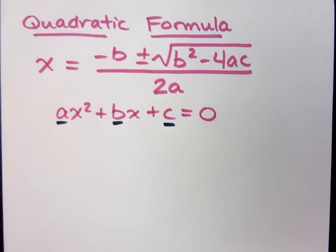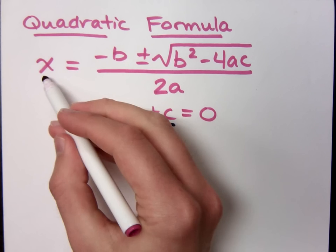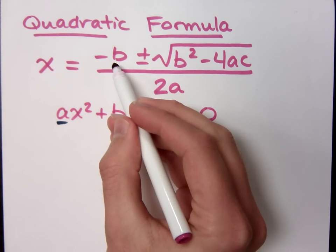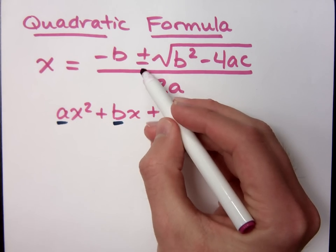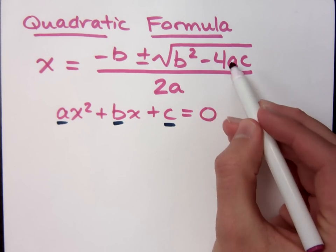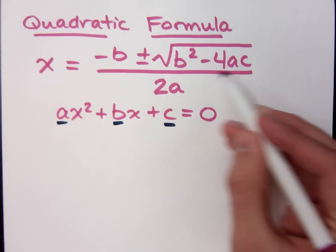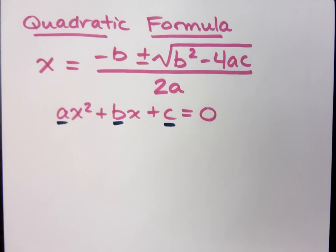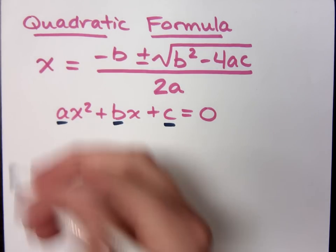Make sure you know the quadratic formula, and I've got something that I think might help you out. x equals negative b plus or minus the square root of b squared minus 4ac all over 2a. That's not so bad. Let's see if we can take this formula and apply it to a problem.